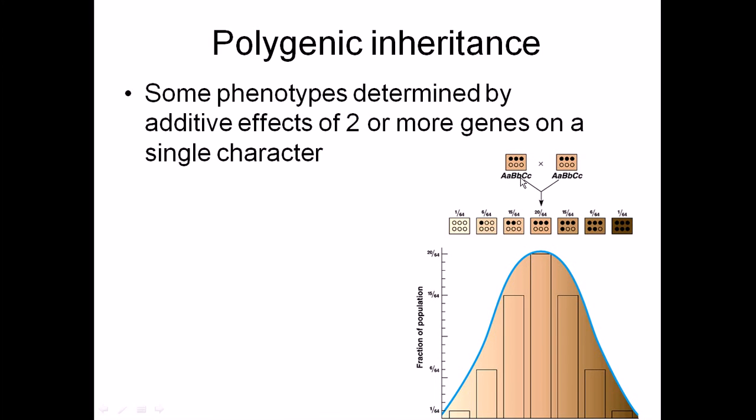If they are present as heterozygous, they give the moderate skin tone. If you cross them, we get maximum as their parental moderate skin tone type and the least amount—one out of 64—for both the fairest and the darkest.